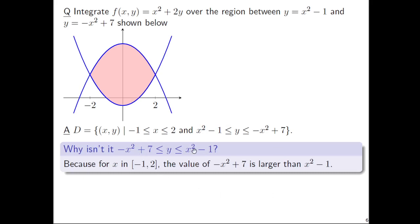So why isn't it the other way around? It's because for the x values between negative two and two, the value of negative x squared plus one is actually the bigger value, it's bigger than x squared minus one is. So we'll set up an integral from negative two to two of integral x squared minus one to negative x squared plus seven of x squared plus two y dy dx.